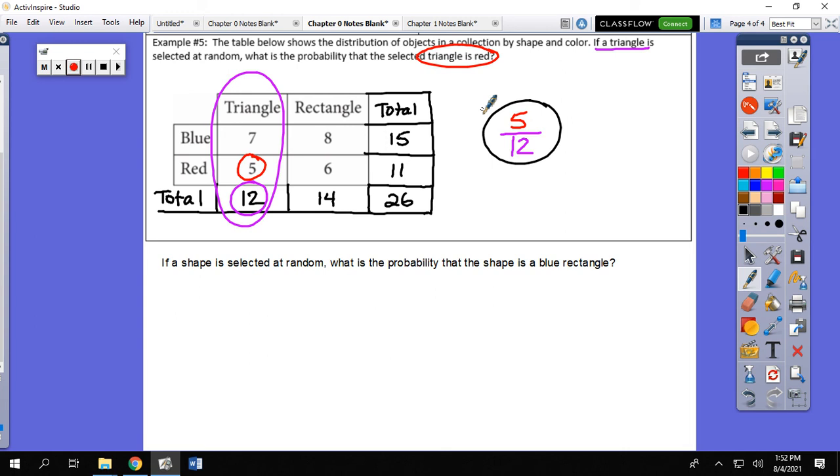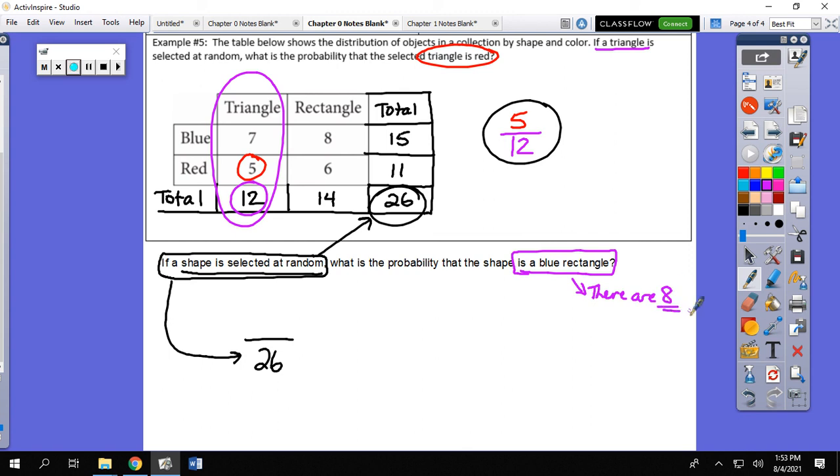So same data table, try the other question there, and then resume the video and see how you did. If a shape is selected at random, we look for shape is selected at random means that we should be looking at the total of 26. So 26 goes on the denominator. What is the probability that that shape is a blue rectangle? So we go and we find out how many blue rectangles there are. And that number is our top number. So 8 out of 26. And then we reduce. Those are both divisible by 2, meaning our answer should be 4 out of 13. That does it for the first lesson of the prerequisite chapter of chapter 0. Thank you very much for your time and attention.